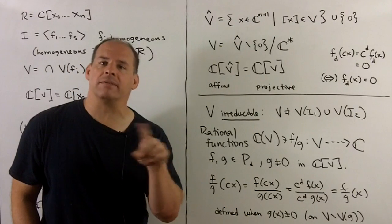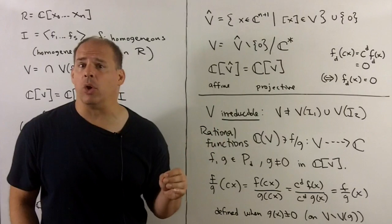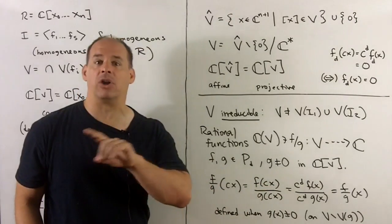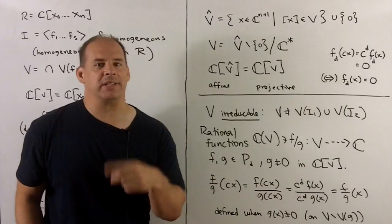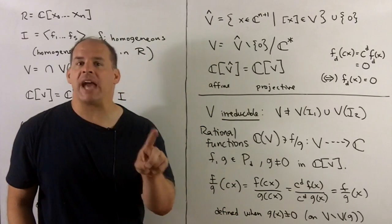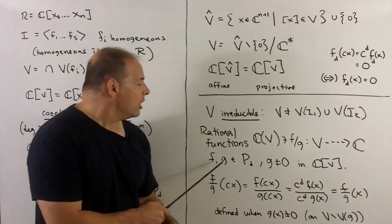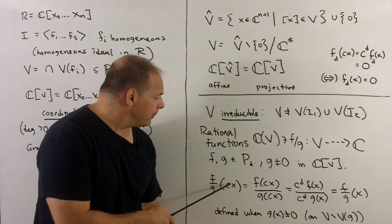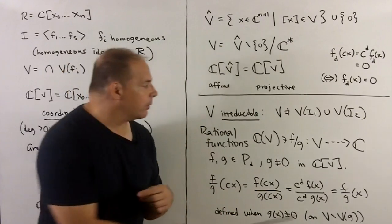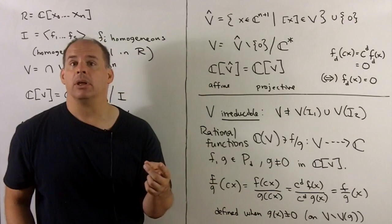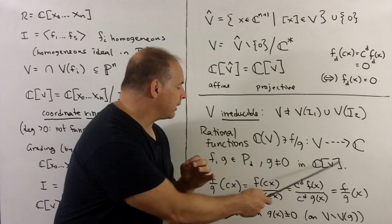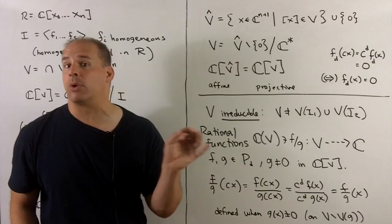We don't have functions on projective varieties other than the constants if we only use polynomials. Instead, we can use rational functions, which are only going to be densely defined — not defined at all points. The idea is we take a polynomial over another polynomial, and to have these well-defined on projective space, we need to use polynomials that are homogeneous of the same degree. That way, if we multiply by a scalar, since we're using the same degree, the scalar comes out to the same power, cancels out, and we get the same value — so these are well-defined on lines. G has to be non-zero as an element in the coordinate ring, and then the domain of a rational function is the variety with the vanishing set of G thrown away.